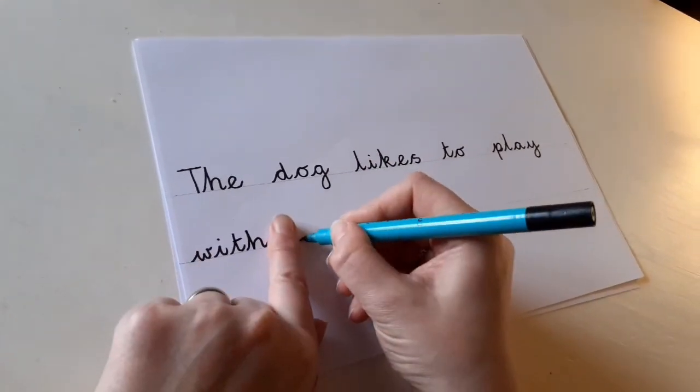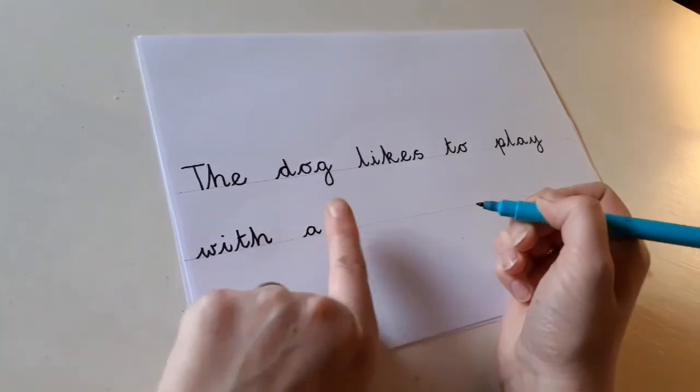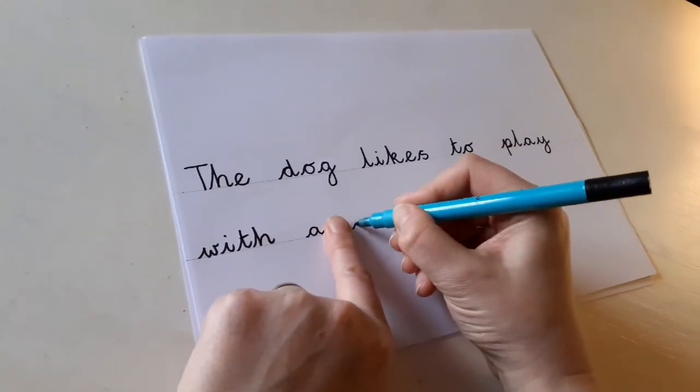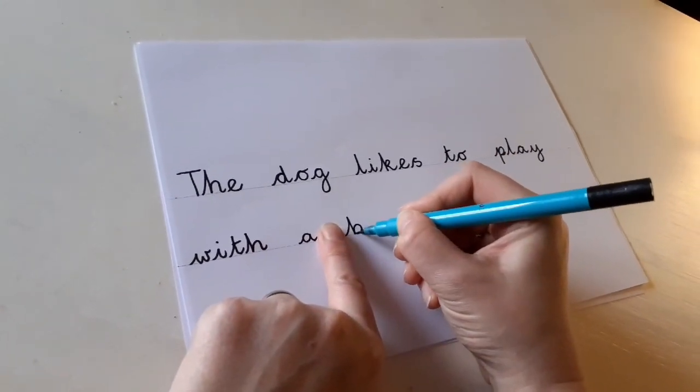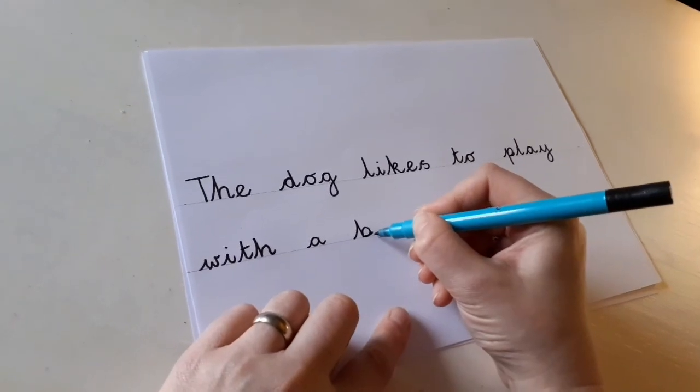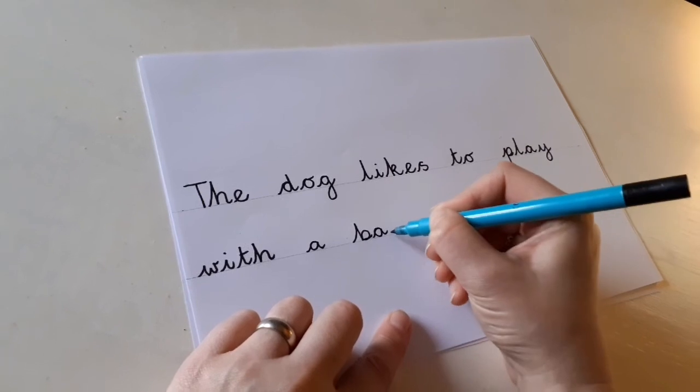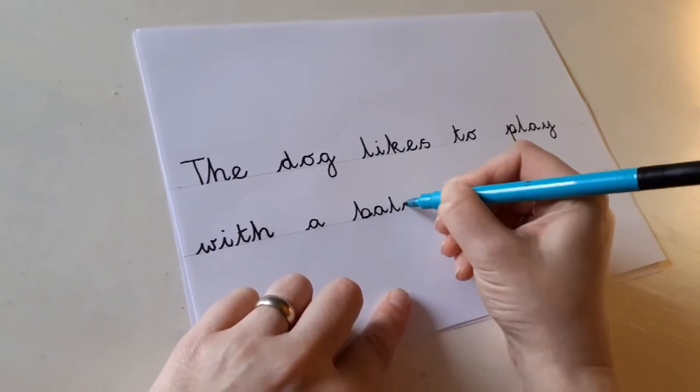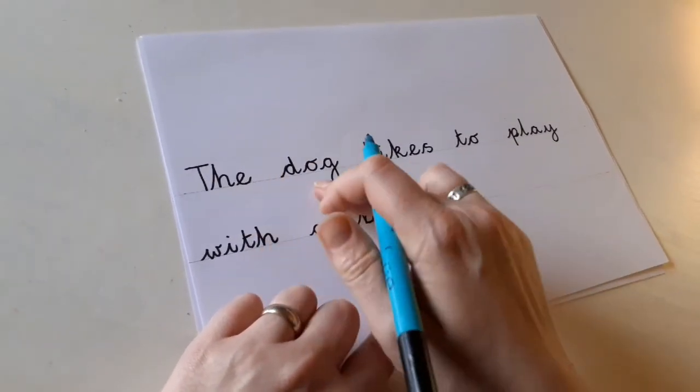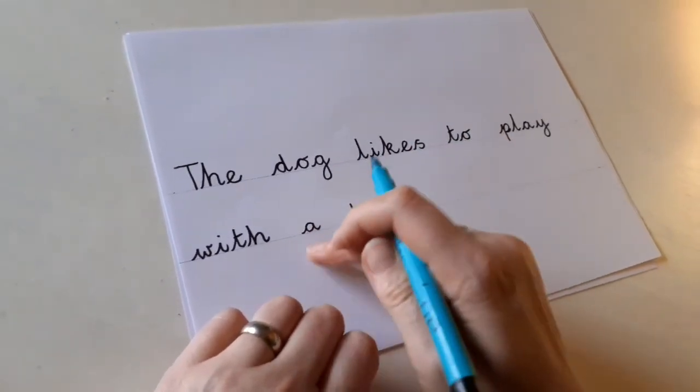Let's do a finger space for a. Finger space again for ball. We know it starts with b. It's a bit of a tricky one to sound out. Or, or, or. Because it sounds like o, but it isn't. It's an a. And then we need an l, and it's a double l. The dog likes to play with a ball.